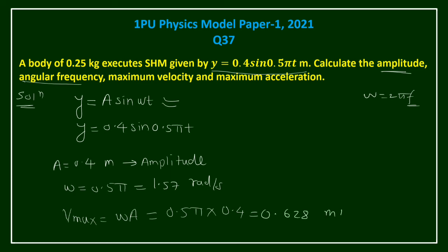So this is your third answer. Then what we have to calculate - acceleration. So maximum acceleration is given as omega squared times A. So omega is 0.5π, bracket square, into A which is 0.4.